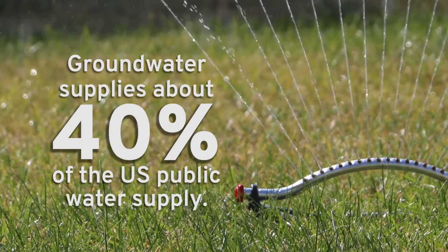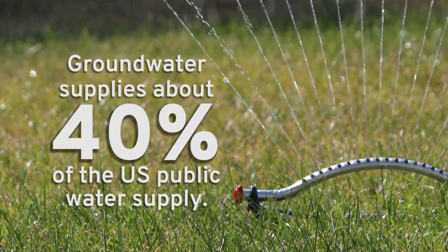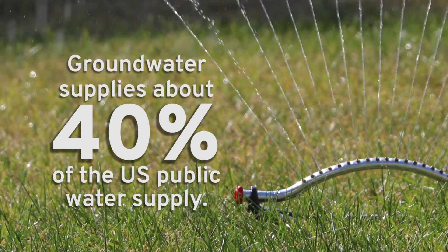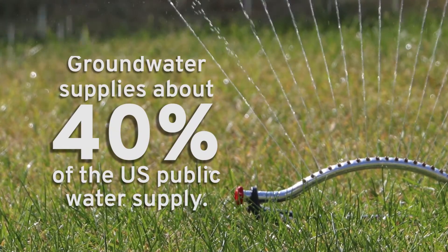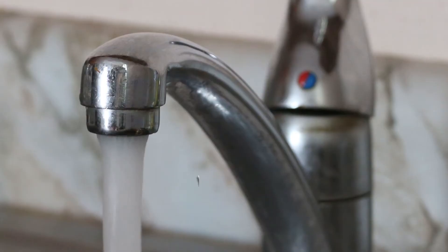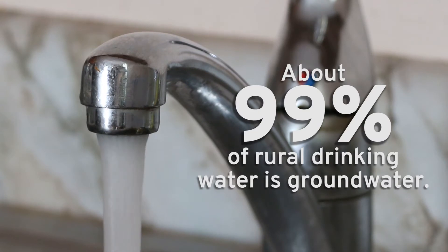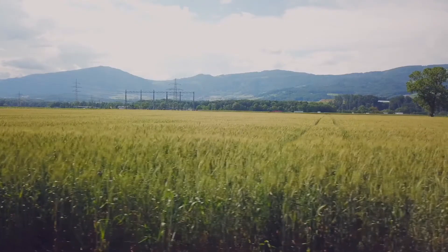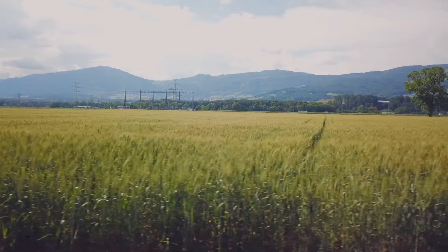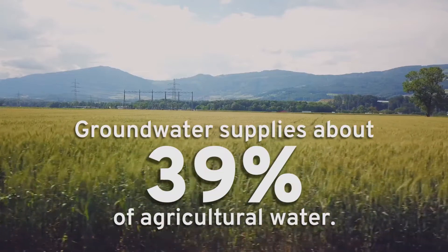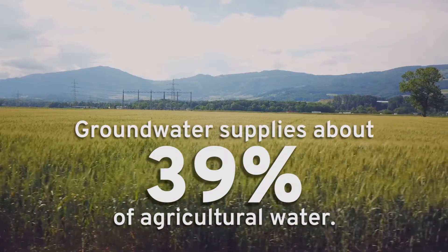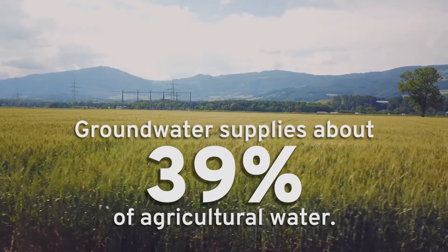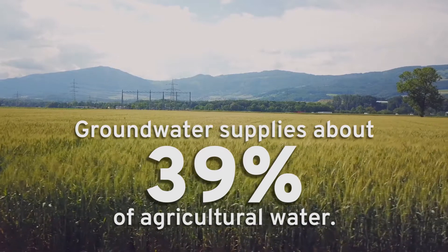Groundwater is a source of about 40% of the total U.S. public water supply. About 99% of rural drinking water is groundwater. Groundwater also helps grow our food — it supplies 39% of agricultural water, the irrigation water that grows our crops.